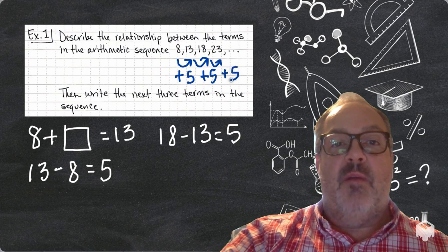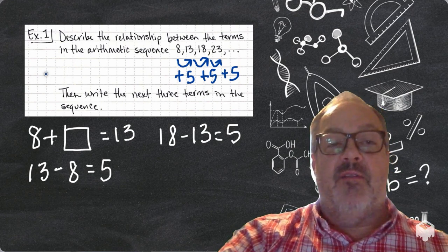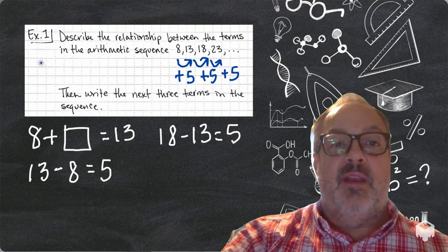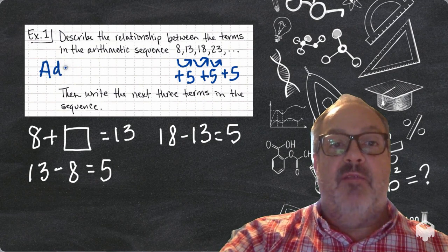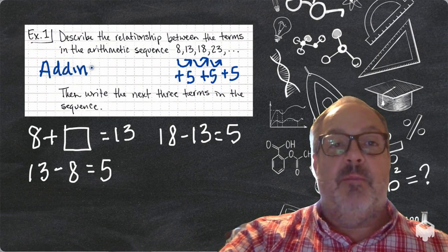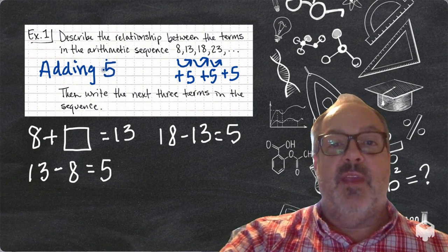And then to go from 18 to 23, I'm also adding 5. So, what that means is that my relationship is that I'm adding 5 each time. I can also write that as plus 5, means the same thing.